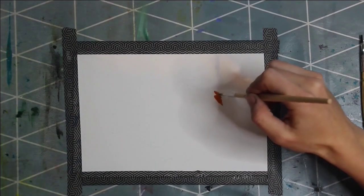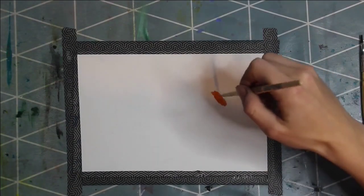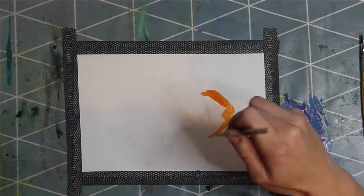Then I draw the first layer of the fish. For that I use a light orange. With that color I fill the whole body.